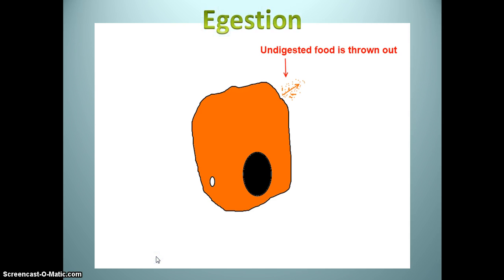Egestion. Amoeba has no fixed place for removing the undigested part of food. When a considerable amount of undigested food collects inside amoeba, then its cell membrane suddenly ruptures at any place and the undigested food is thrown out of the body of amoeba.